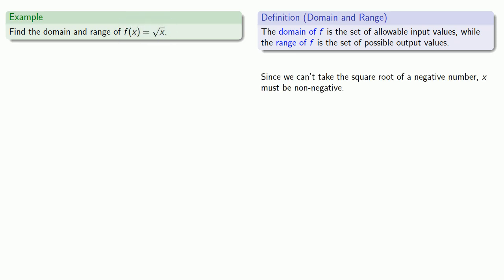Since we can't take the square root of a negative number, x must be non-negative. So in interval notation that means that x is going to be in the interval from zero included up to infinity.